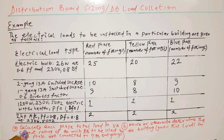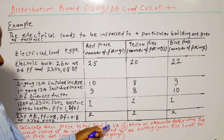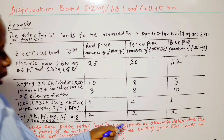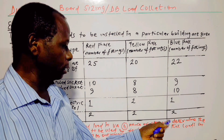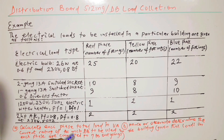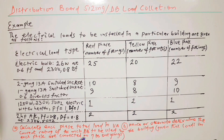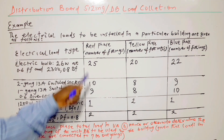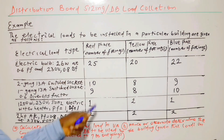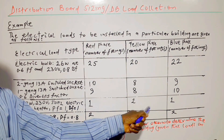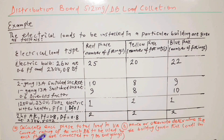Now the questions. Part A: calculate each phase total load in VA — that is the apparent power S on each phase. Part B, hence or otherwise, determine the current rating of the miniature circuit breaker distribution board to be used in the building, given that loads on each phase are connected to 7 DB outgoings. That means 7 for red, 7 for yellow, 7 for blue — giving a total of 21 — because it's a 3-phase distribution board.